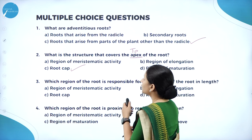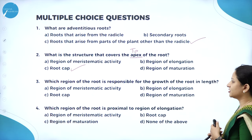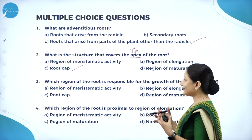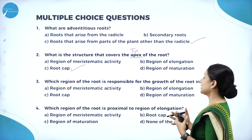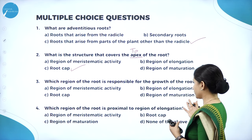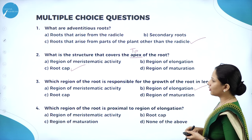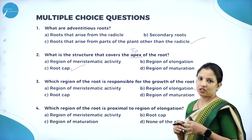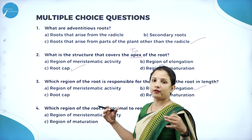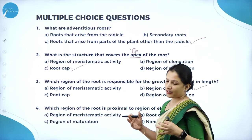Which region of the root is responsible for growth in terms of length? It is the region of elongation, because in this region, cells that have actively divided tend to elongate, so that the length of the root increases.